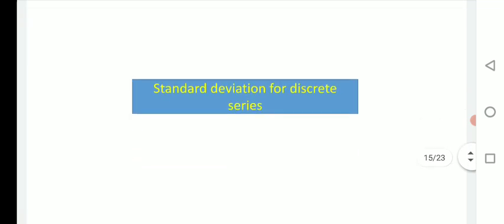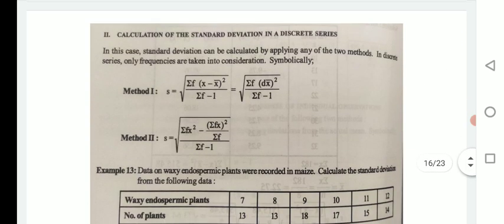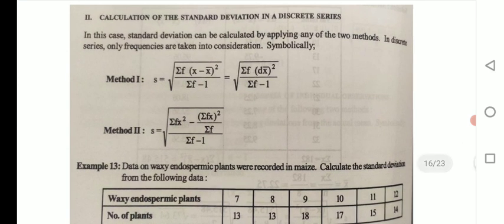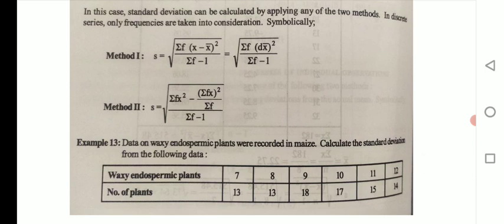Next is standard deviation for discrete series. The formula additionally includes frequency. There are two formulas for two methods. Whenever there is a problem of discrete series, you must calculate frequency. The problem given is: data on vaccine endospermic plants recorded in maize — calculate the standard deviation.